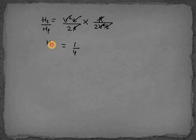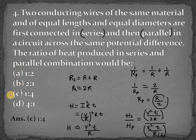So Hs over Hp equals 1 over 4. That's your answer. That means option C is the right option for question number 4. Thank you.